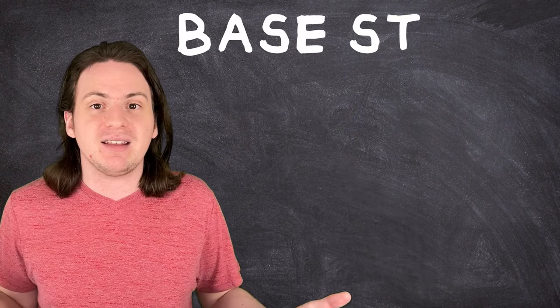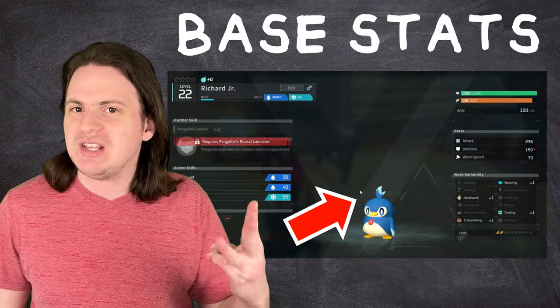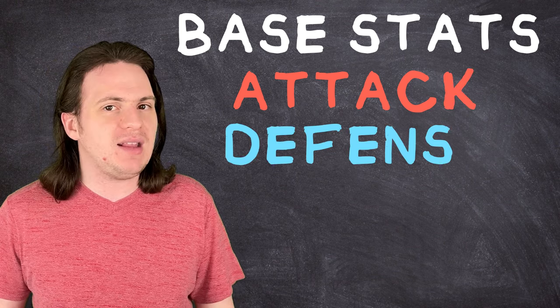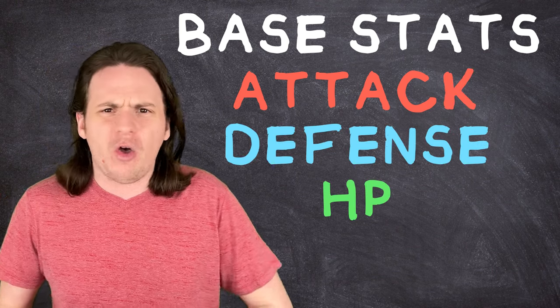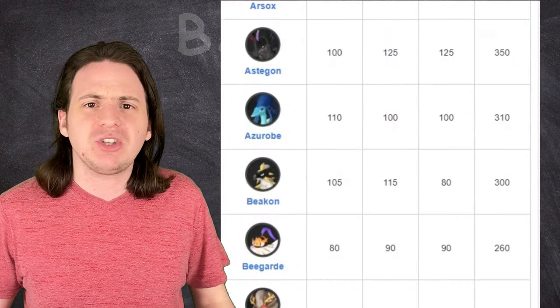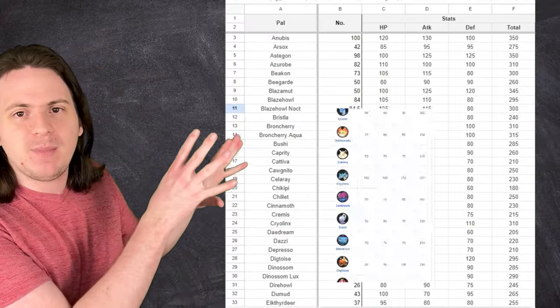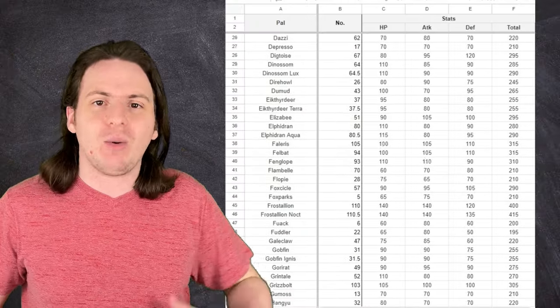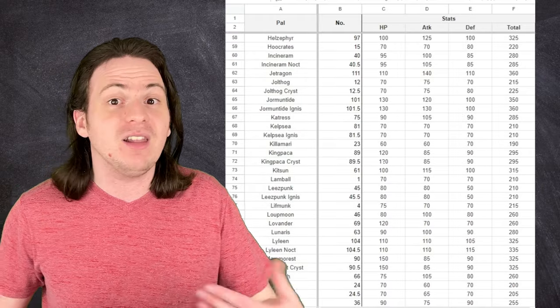Now these have to be expressible with numbers. So as an easy first example, base stats. Every pal has three stats: Attack, Defense, and HP that are all easily available on the internet. So I can just grab those, pop them in a spreadsheet, and make those our first three criteria. And luckily, all the other criteria will be just as easy to obtain. Just kidding, idiot!